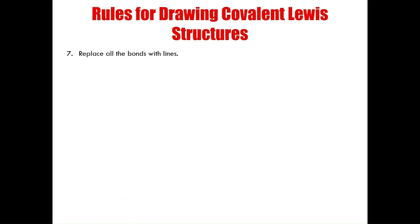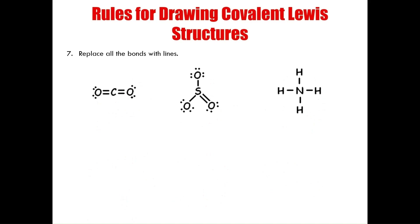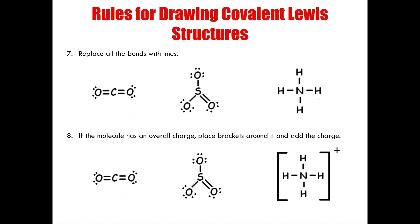Rules seven and eight add the finishing touches. Rule seven: replace all the bonds with lines. For carbon dioxide, the double bonds become two parallel lines connecting carbon and each oxygen. Sulfur trioxide shows one double bond and two single bonds; ammonium shows four single bonds. Rule eight: if the molecule has an overall charge, place brackets around the entire molecule and add the charge. Carbon dioxide and sulfur trioxide remain unchanged, but the ammonium ion gets brackets with an overall positive charge.